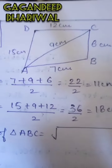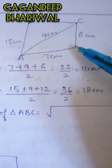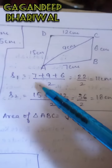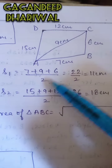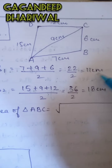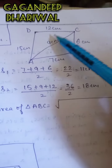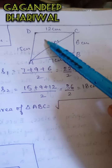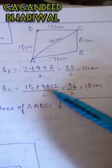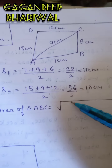For this, firstly you have to find the semi-perimeter. For triangle ABC, the semi-perimeter is (7 + 9 + 6) / 2, which is 22 / 2, equal to 11 centimeters. Now for triangle ACD, that is (15 + 9 + 12) / 2, equal to 36 / 2, equals to 18 centimeters.